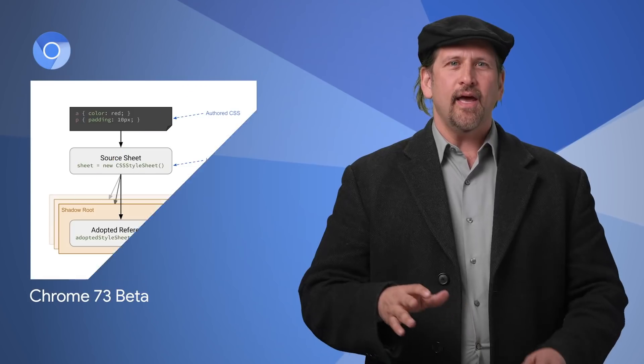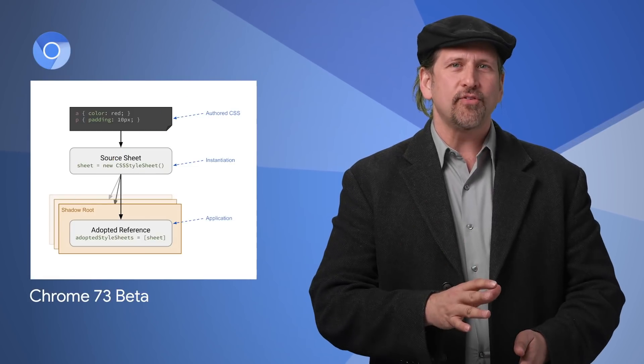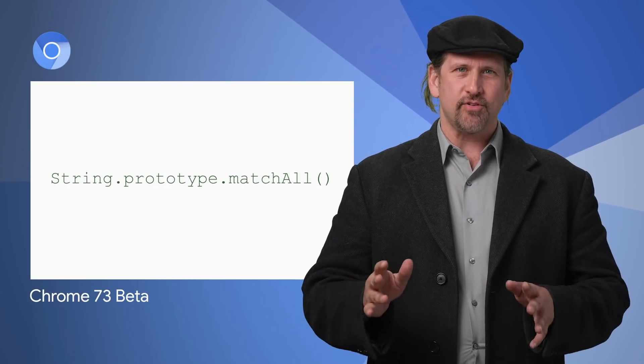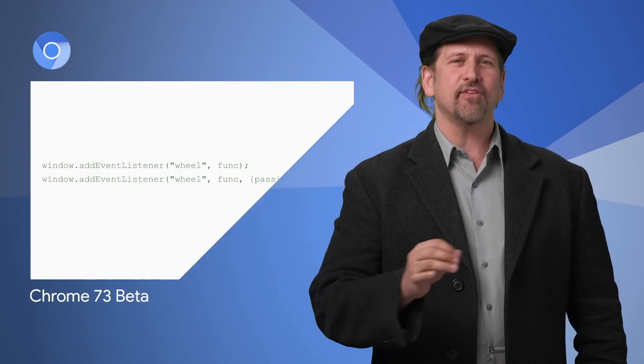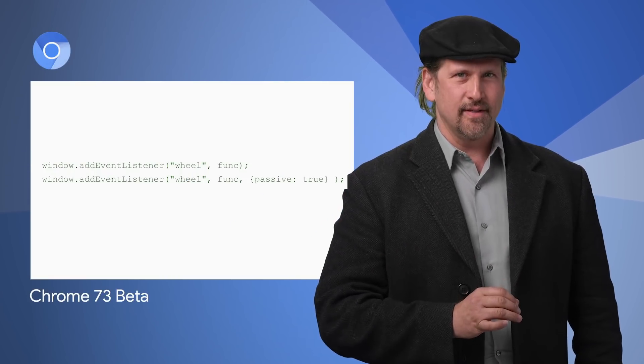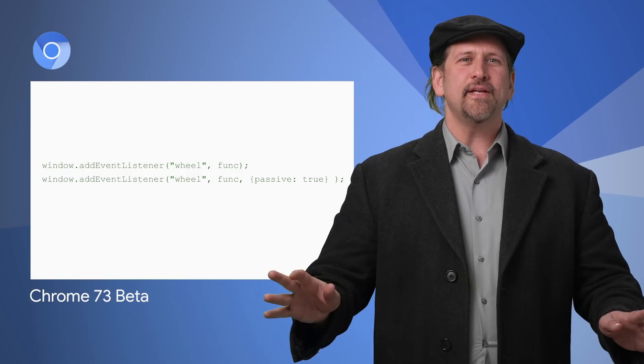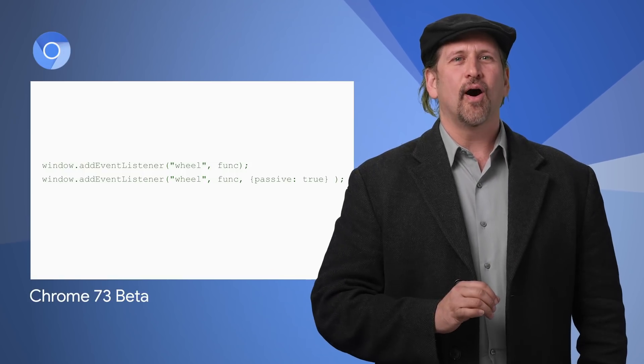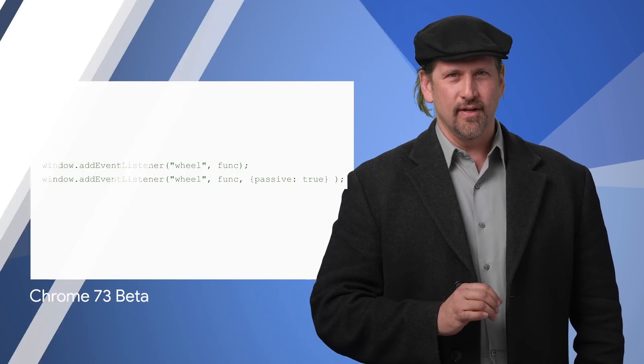Chrome 73 beta is now available and includes constructible style sheets, a new regular expression function, and passive mouse events. All the details with code are on the post.